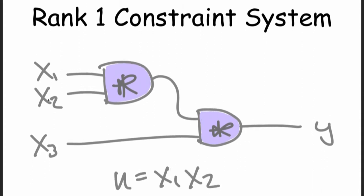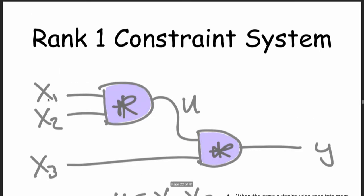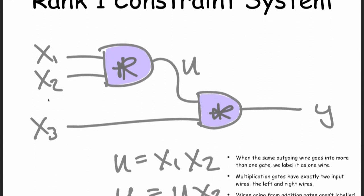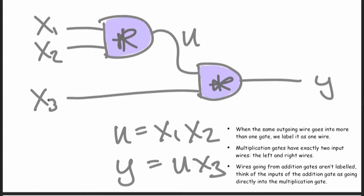What we need to do to turn this into a rank one constraint system is flatten it. Every equation can only have two unknown elements multiplied together at most — this is essential for the way SNARKs work. So we introduce an intermediate variable u equals x1 times x2, and we label this wire coming out of that multiplication gate u. Then the next thing is we multiply the third unknown input x3 with u to get the output. Each step is just doing one multiplication — there's never an unknown times an unknown times an unknown. It's only two at a time.